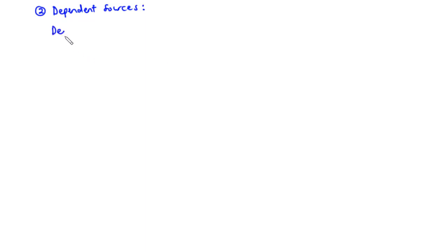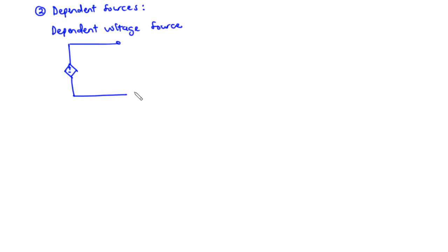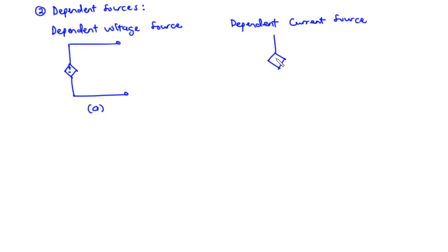If you want to draw the symbol for a dependent voltage source, you are going to have a diamond-shaped symbol with a polarity inside showing that it is a voltage source. And then for the dependent current source, you also have the diamond-shaped symbol with an arrow indicating the direction of the current. So these are the symbols for the dependent voltage source and the dependent current source.